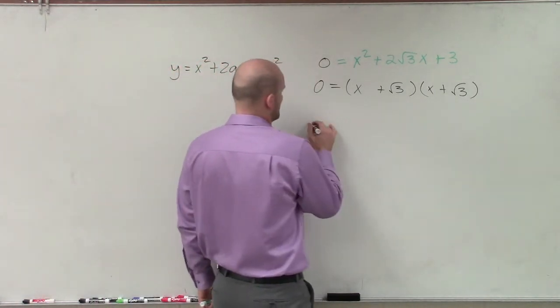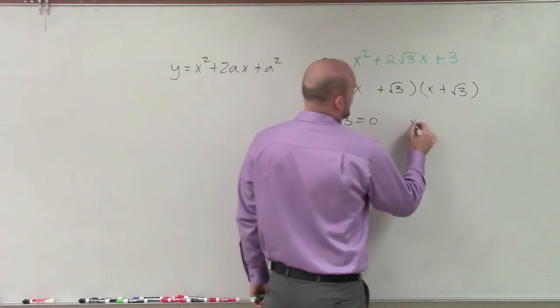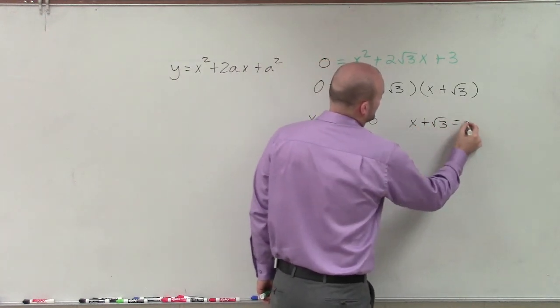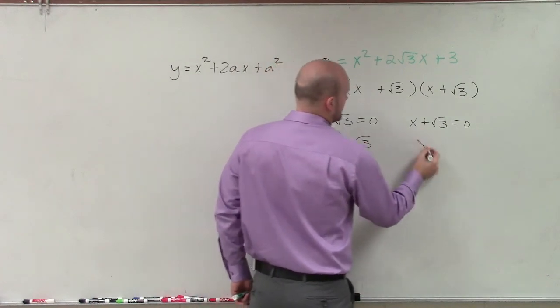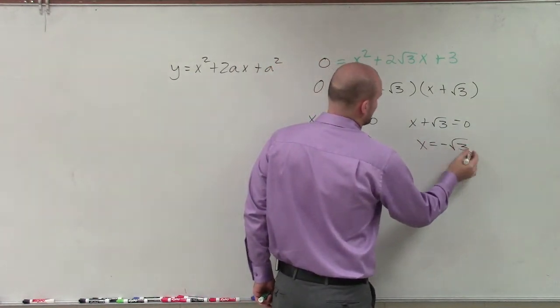So I have x + √3 = 0. When I solve, I get x = -√3.